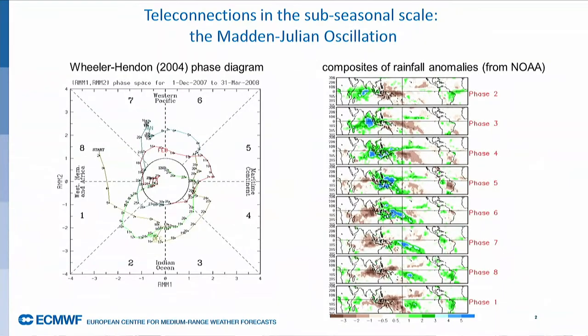Let's start from the sub-seasonal experiment. You've already seen a diagram like this many times. I will come back to show you this particular version of the Wheeler and Hendon phase diagram, because it describes one case of very strong Madden-Julian oscillation that occurred during the winter 2007-2008.